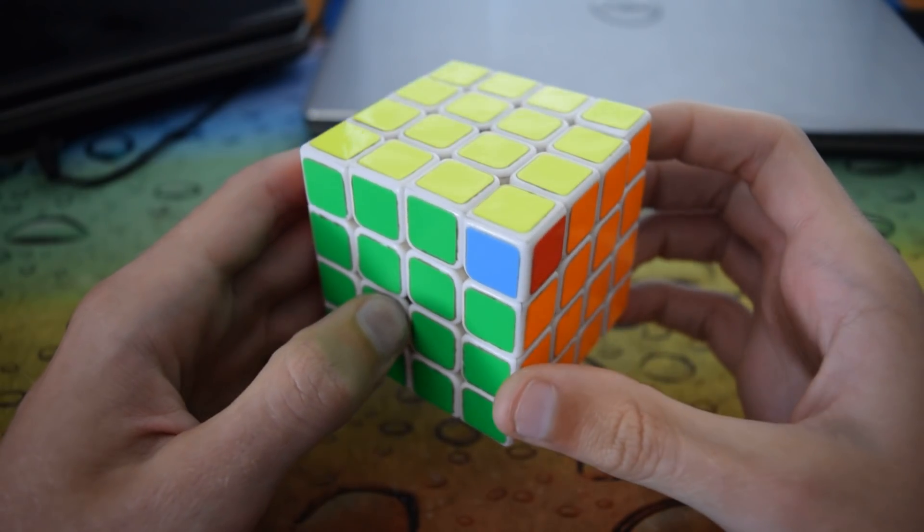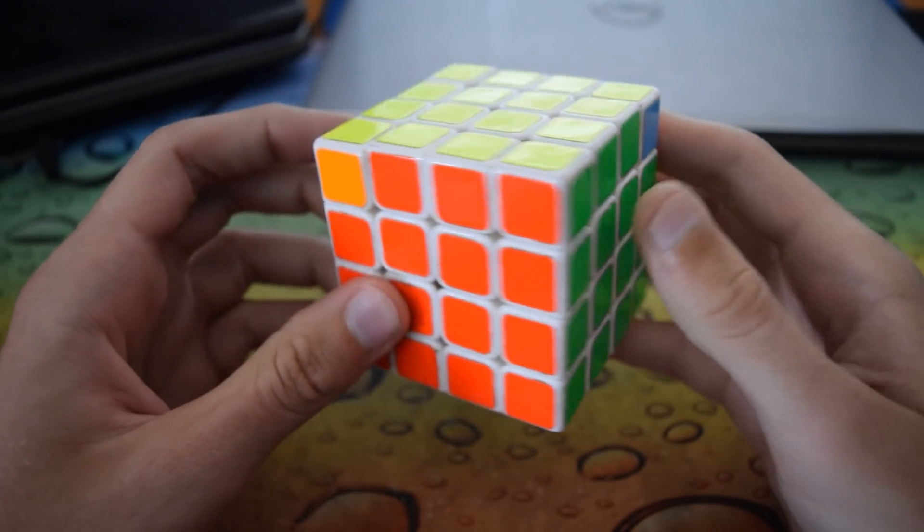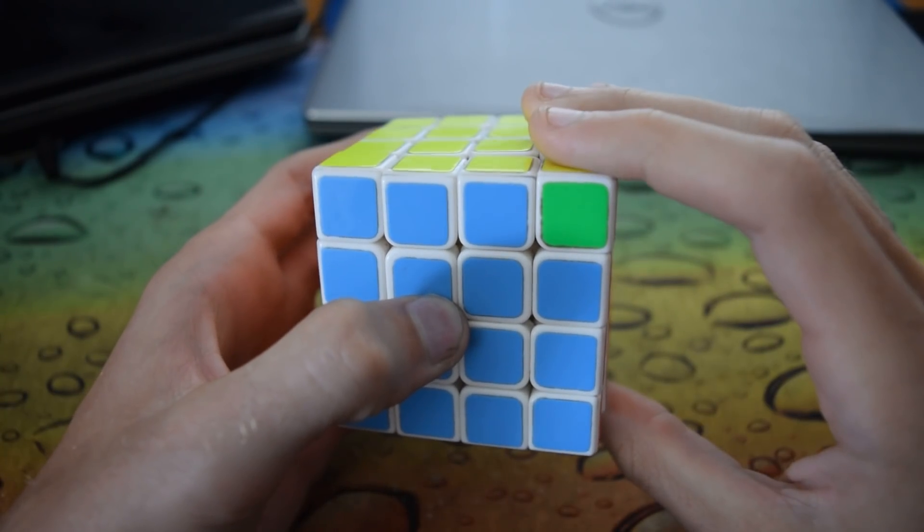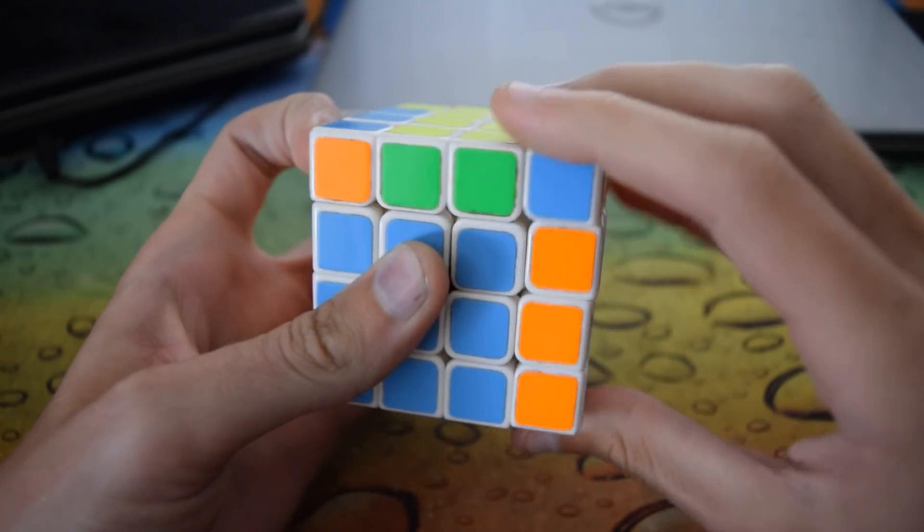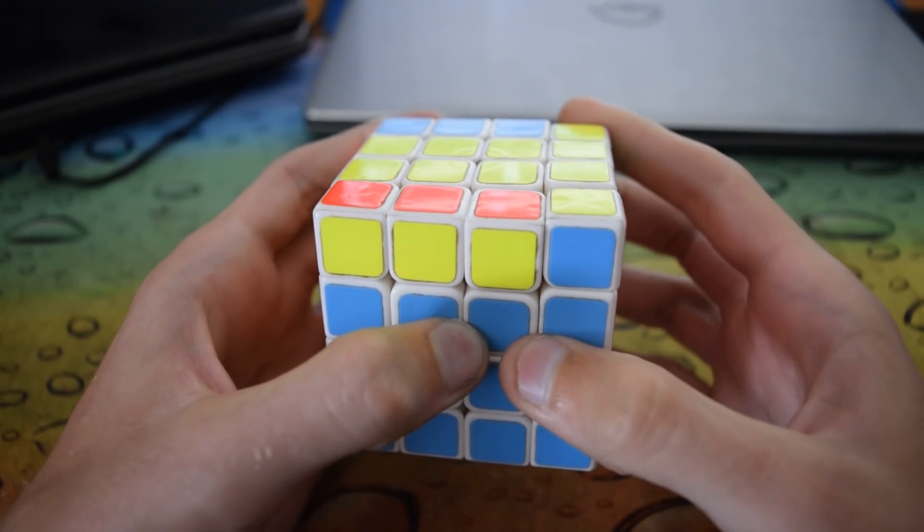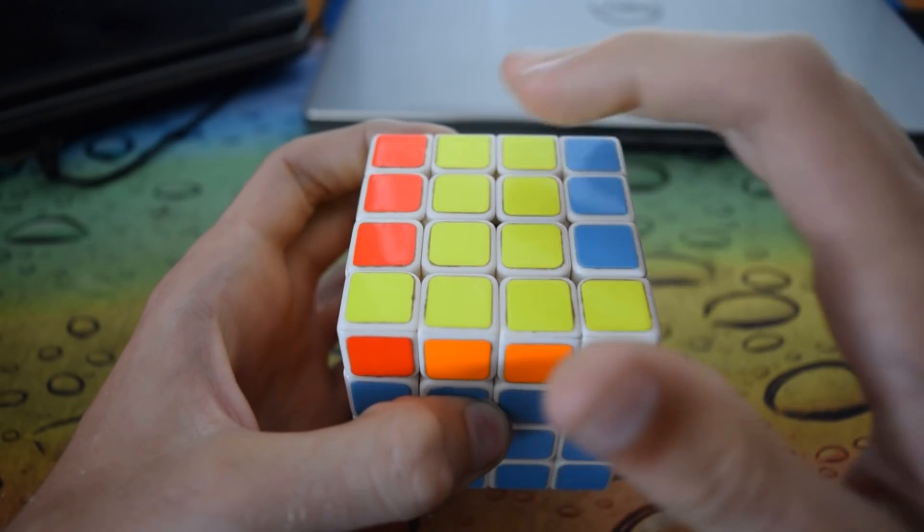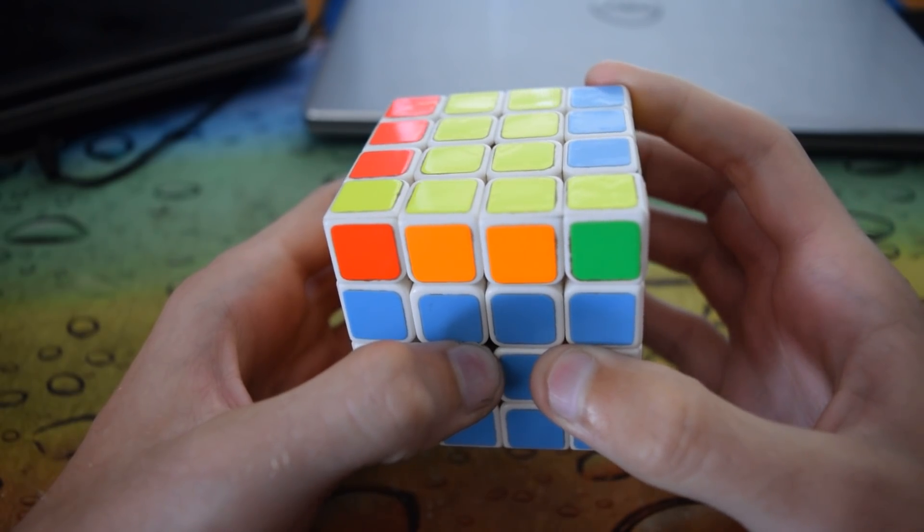So the first one that you probably know already is the two-corner swap. This case goes like this: the first half of the Y perm, then a U so that you get these in line, then do your PLL parity algorithm.